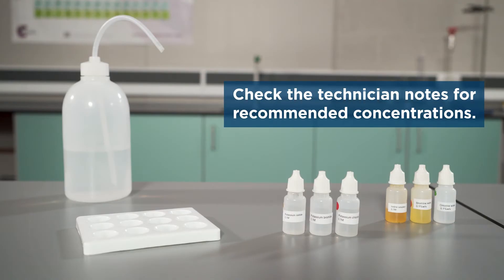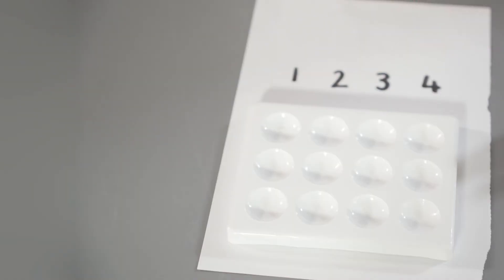We will carry out this experiment using a dimple tray. It is important that you label the rows and columns so you don't forget what you put in each dimple. You could use, for example, a piece of paper underneath your dimple tray or use a non-permanent marker to label the rows and columns: one, two, three and four.